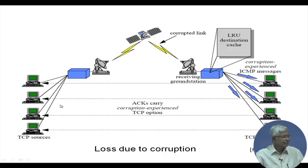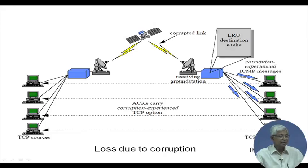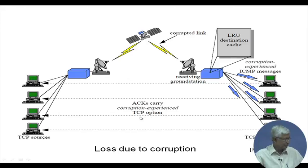Pictorially, as the link is corrupted on the downlink, the receiving ground station's local cache detects it and sends an internet control message packet — a corruption-experienced special message — along with the data. This is sent back with the ACK to the source, carrying the additional corruption-experienced information.